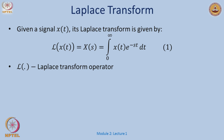By definition, given a signal x(t), the Laplace transform is: X(S) = L{x(t)} = ∫₀^∞ x(t)·e^(−St) dt. In most texts you would see this as 0⁻ to account for impulses at the origin, but we will use 0. L is the Laplace transform operator, which transforms a signal from the time domain to the Laplace S-domain.